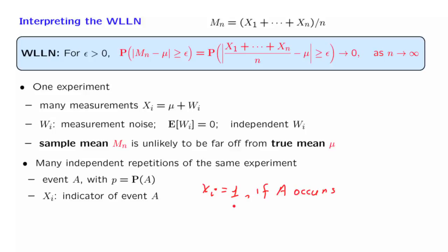The expected value of the Xi's, the true mean in this case, is equal to the number p. In this particular example, the sample mean just counts how many times the event A occurred out of the n experiments that we carried out. So it's the frequency with which the event A has occurred.